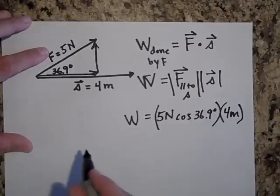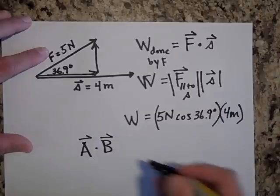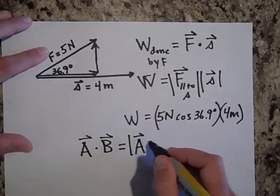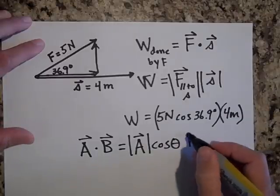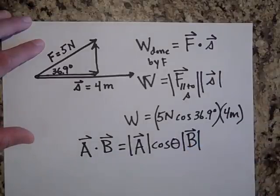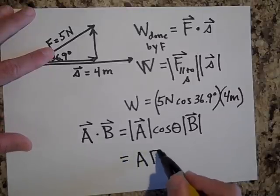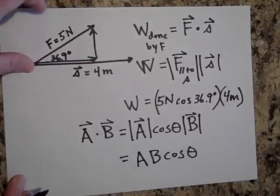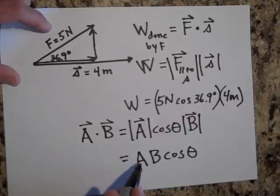In general, whenever you do A dot B, that equals the magnitude of A times cosine of theta — the angle between the two vectors placed tail to tail — times the magnitude of B. You can also write it as magnitude of B times cosine of theta times magnitude of A. This gives you the component of A in the direction of B, multiplied by B.